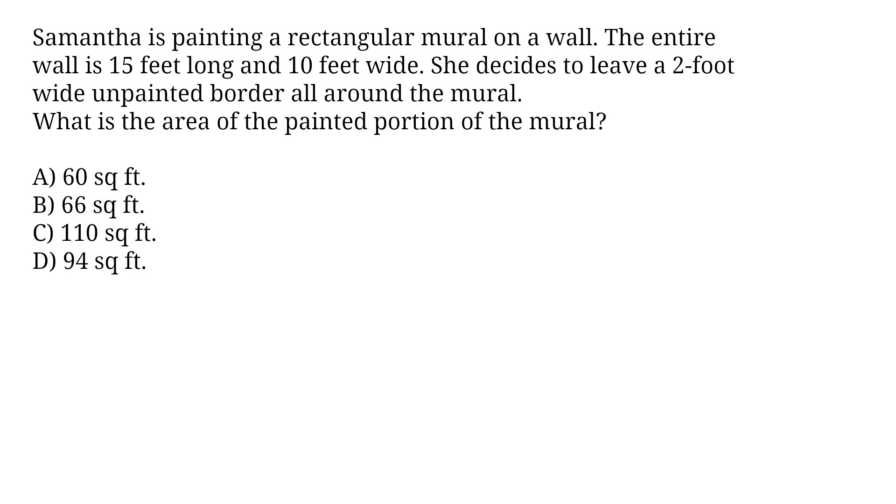Samantha is painting a rectangular mural on a wall. The entire wall is 15 feet long and 10 feet wide. She decides to leave a 2 foot wide unpainted border all around the mural. What is the area of the painted portion of the mural? A) 60 square feet, B) 66 square feet, C) 110 square feet, D) 94 square feet. We looked at a similar question in our September GED 2023 video. That is question 19. We encourage you to watch that video. Find out the similarities and difference with this question and why we used slightly different approach.